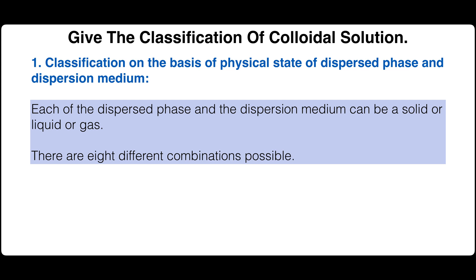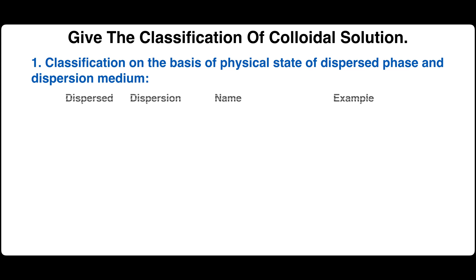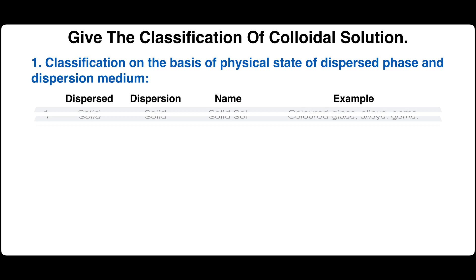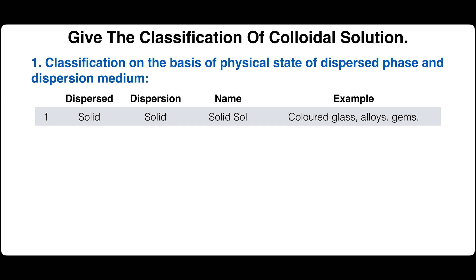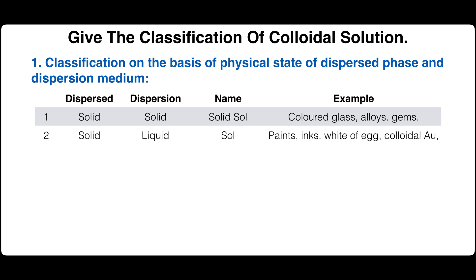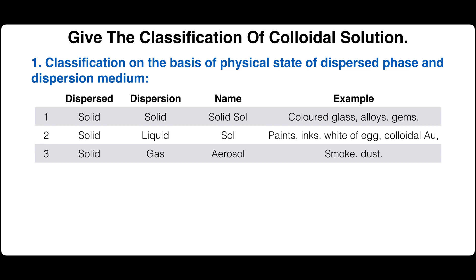There are eight different combinations possible. If the dispersed phase is solid and the dispersion medium is solid, a solid sol is formed; examples are colored glass, alloys, and gems. If the dispersed phase is solid and the dispersion medium is liquid, a sol is formed; examples are paint, ink, white of egg, and colloidal gold. If the dispersed phase is solid and the dispersion medium is gas, an aerosol is formed; examples are smoke and dust.